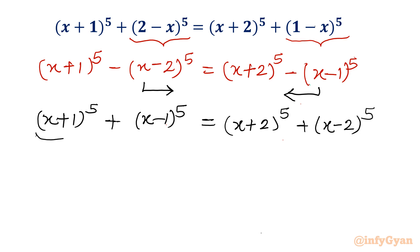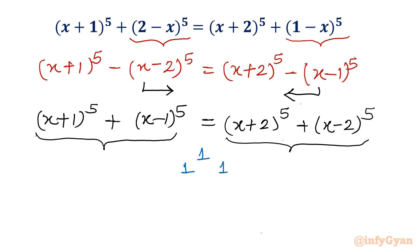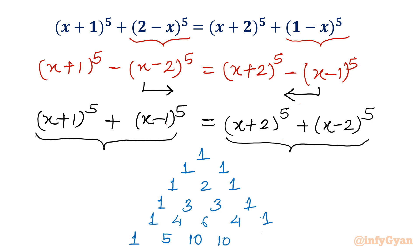Now Pascal's triangle and binomial expansion come into play. For power 5, the coefficients are derived row by row: power 2 gives 1 2 1; power 3 gives 1 3 3 1; power 4 gives 1 4 6 4 1; and power 5 gives 1, 5, 10, 10, 5, 1. These are the coefficients we will use for our expansion.